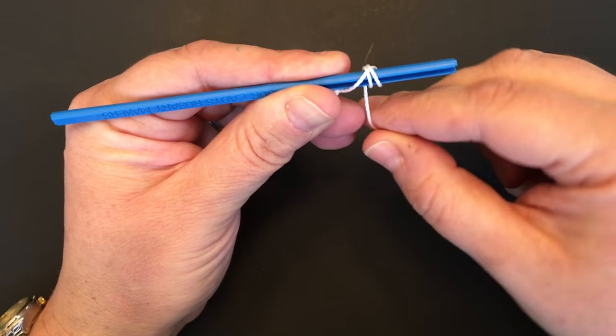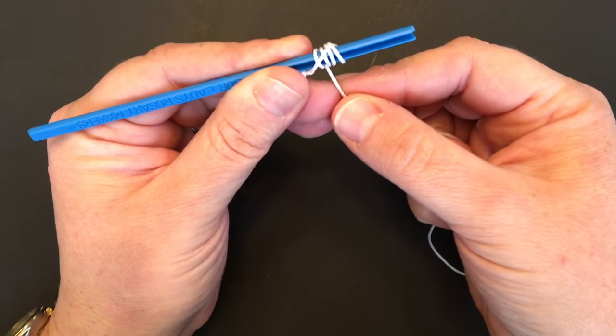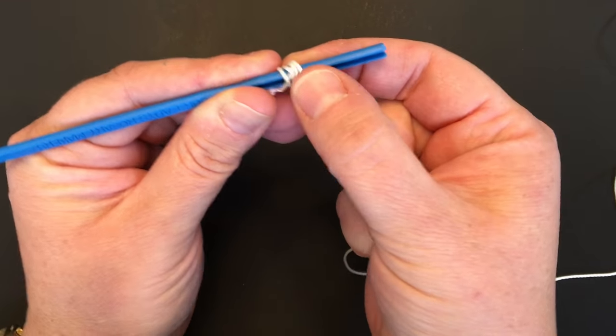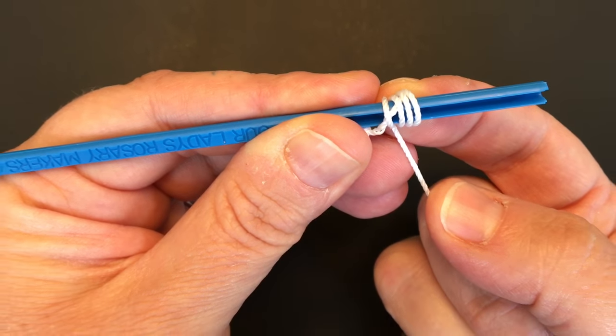As you make each loop, the loops are going towards the palm of your hand or towards the thumb holding the cord. You should have a total of four loops on your tool going over the groove.